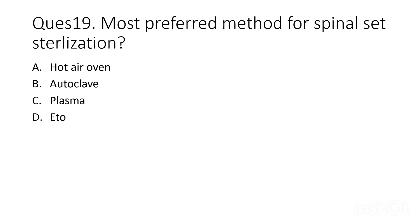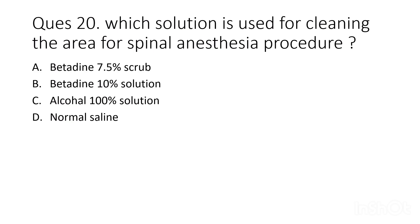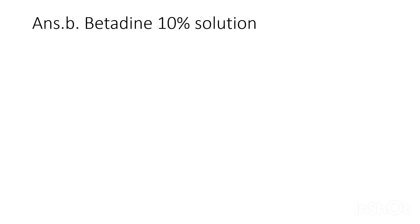Eighteenth question: most preferred method for spinal set sterilization? Options are hot air oven, autoclave, plasma, or ETO. The correct answer is autoclave. Nineteenth question: which solution is used for cleaning the area for spinal anesthesia? Options are betadine 7.5% scrub solution, betadine 10% solution, alcohol 100% solution, or normal saline. The correct answer is betadine 10% solution. Thank you for watching; in the next part we will discuss more important questions on spinal anesthesia.